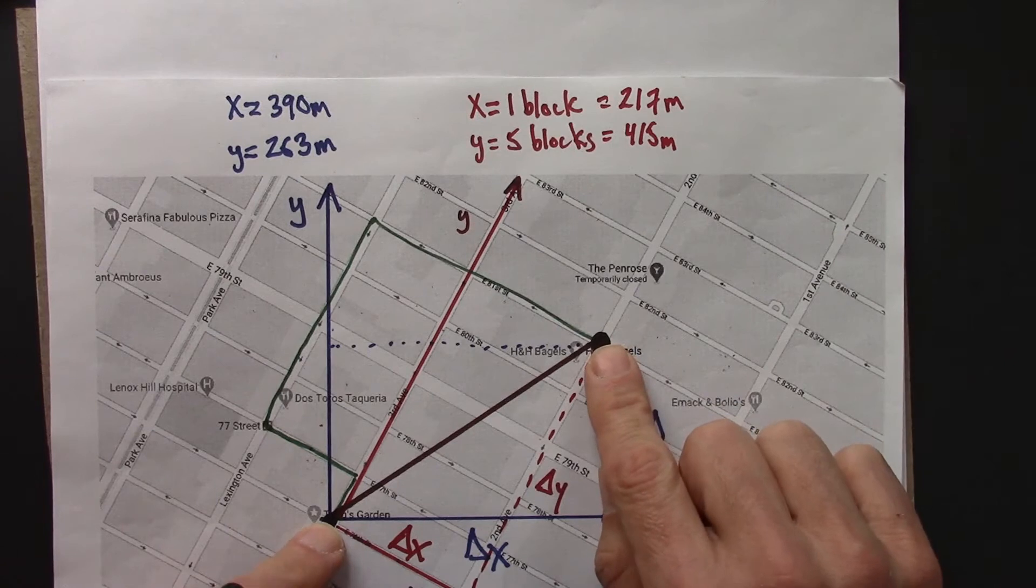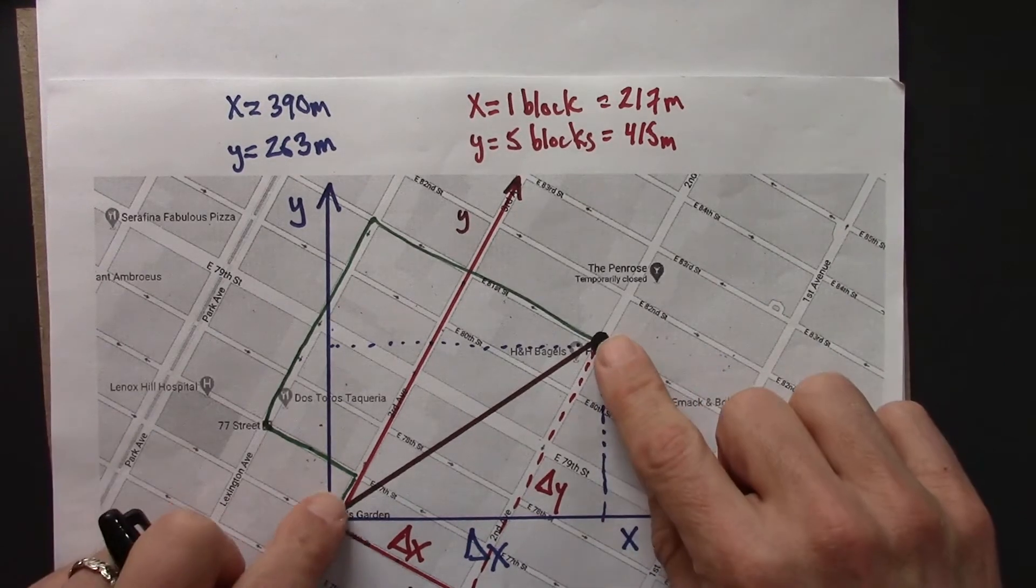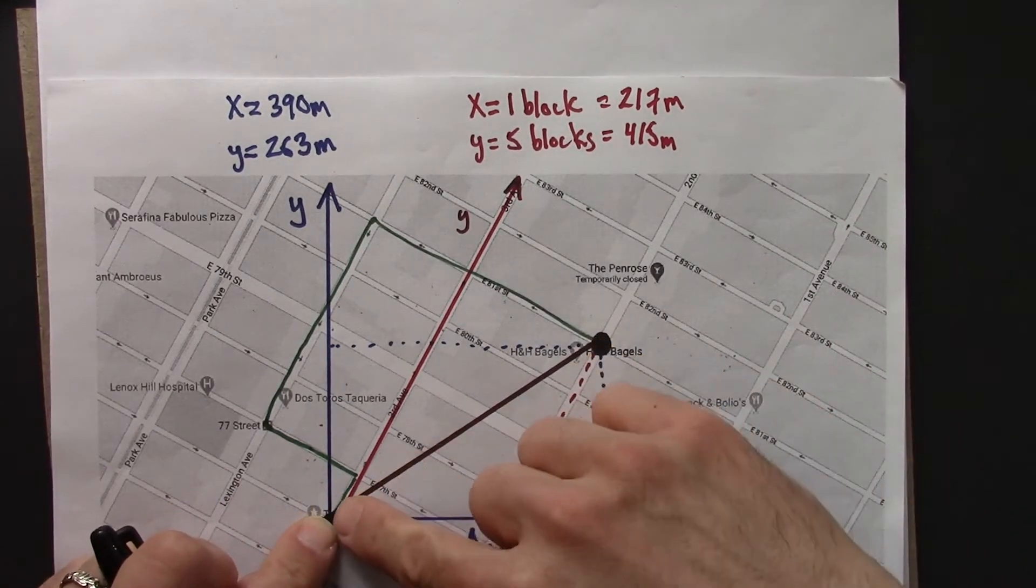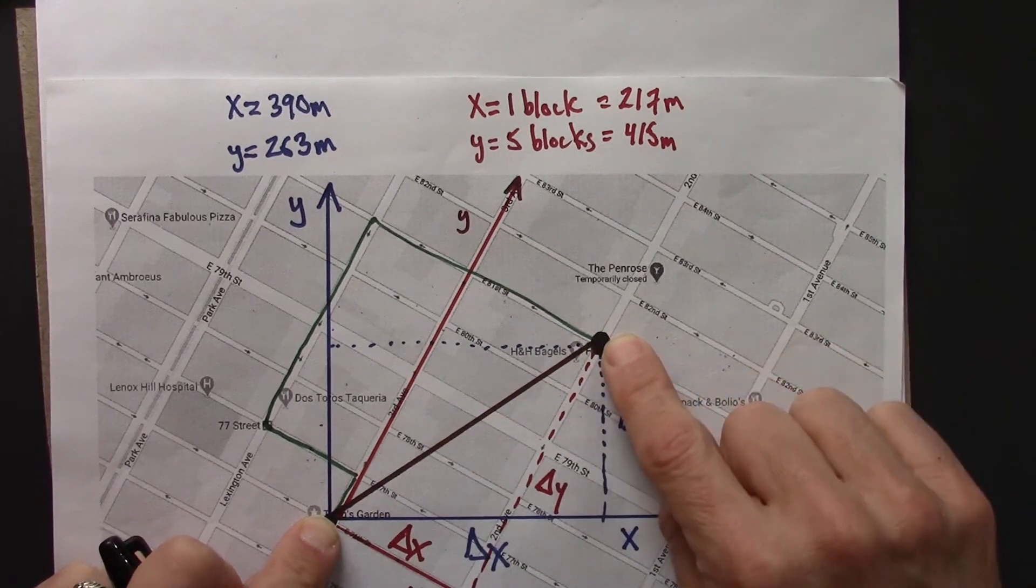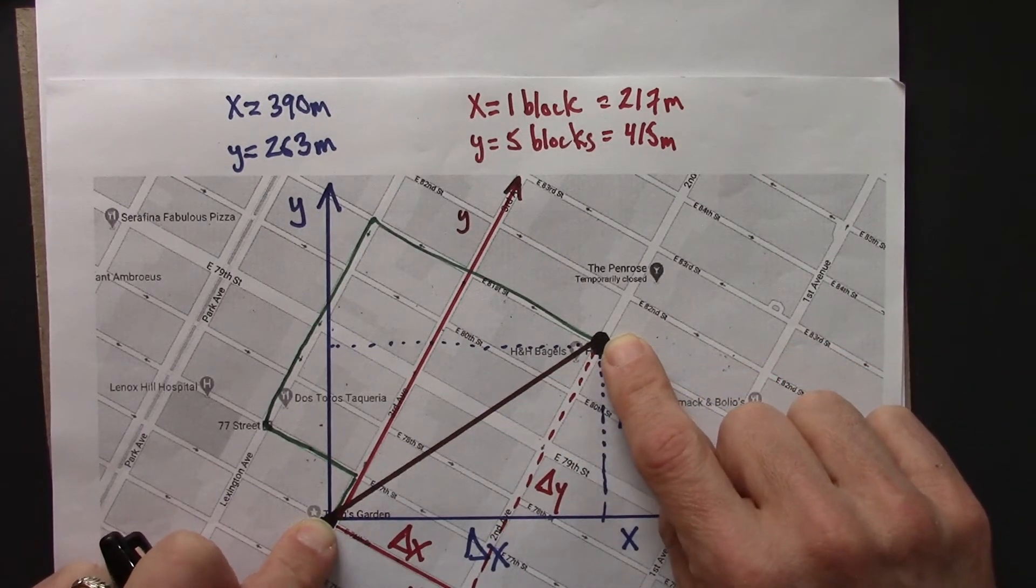I want to think again about distance. Just a reminder that distance is the length of the shortest path, straight line path, between two points.